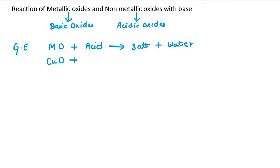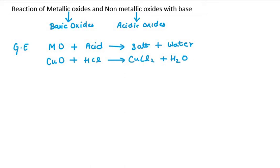Copper oxide plus HCl, which is an acid — what will be my salt? It will be copper chloride, plus water. This equation is not balanced; if you can balance it, you can do it. When we have copper oxide and react it with HCl, which is an acid, we get salt and water. Copper oxide, when it reacts with HCl, gets transformed into salt and water.